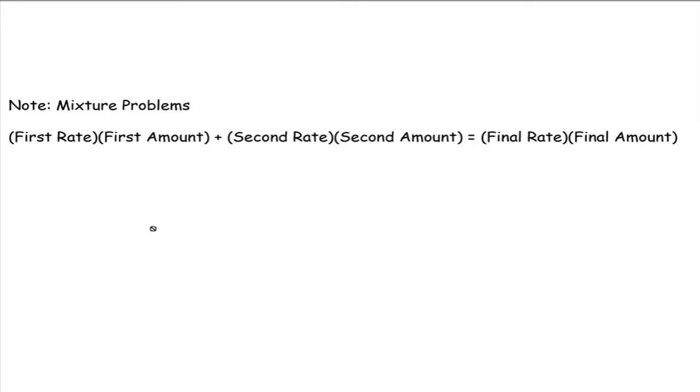The amounts would be how much you have, 10 pounds, 55 gallons, whatever the case may be. So that's the difference between the rates and the amounts.